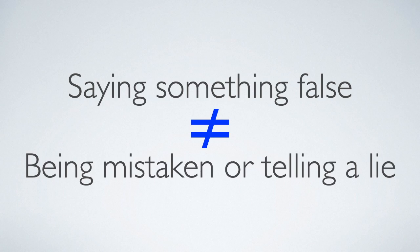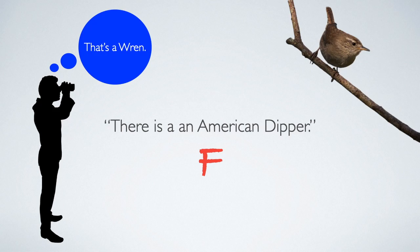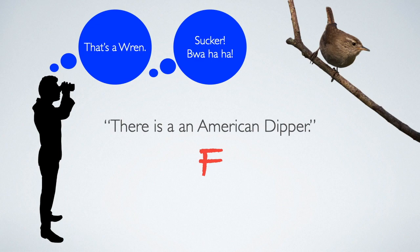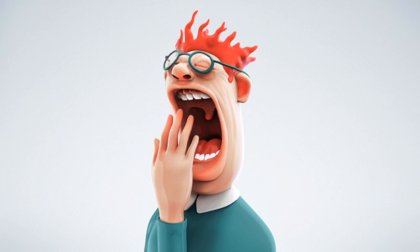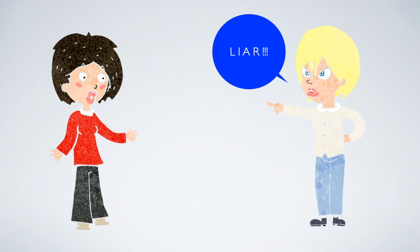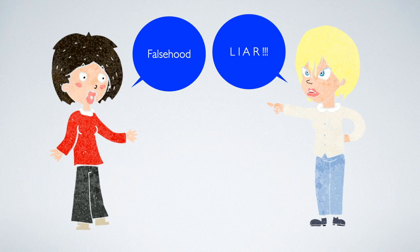But that raises the question: when is it a lie? This is a wren. And let's say I know it's a wren, but I say 'there is an American dipper.' Now why would I do such a thing? Because I'm trying to deceive you. This is a lie. So on my analysis, to lie is to make a statement you do not believe in order to deceive. Now at this point you might be thinking, 'boring! Everyone knows what a lie is.' But actually, I think there's a lot of confusion about this. To call somebody a liar, it's not enough that they said something false. As we've seen, you have to know that they didn't believe what they said — in other words, you have to know what was going on in their mind. And that's not always easy.